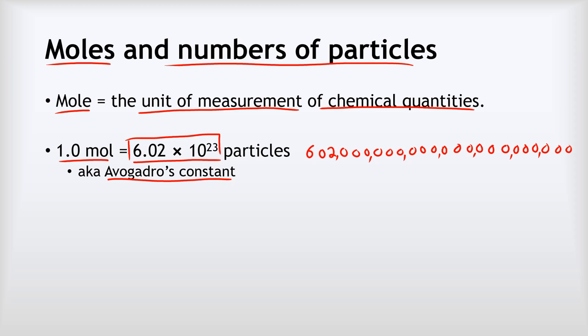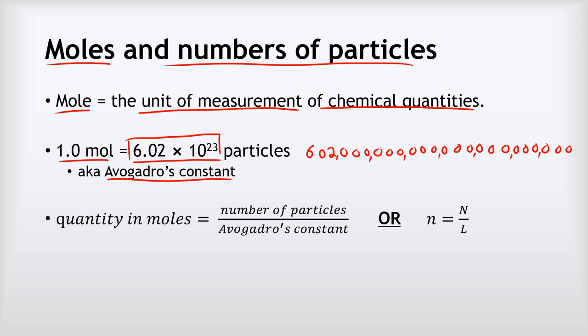The key calculation is: the quantity of a substance in moles equals the number of particles present divided by Avogadro's constant. In symbol form: lowercase n (number of moles) equals capital N (number of particles) divided by L (the symbol for Avogadro's constant).